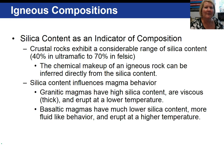Silica content varies in our igneous rocks. Ultramafic rocks can have as little as 40% silica content, whereas felsic rocks can contain greater than 70% silica. The importance of silica is its influence on magma behavior. The felsic or granitic magmas with high silica content — 70% or greater — means that the magma is very viscous.